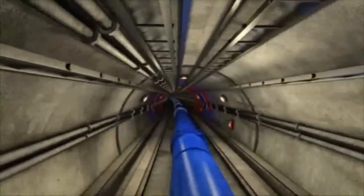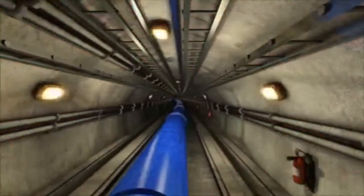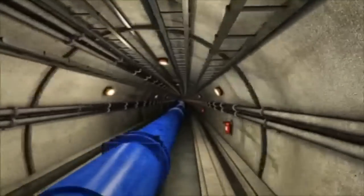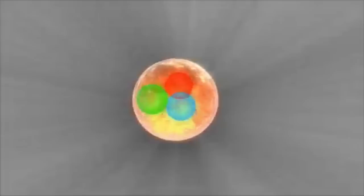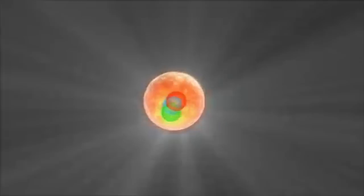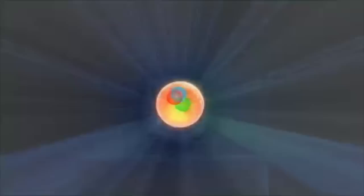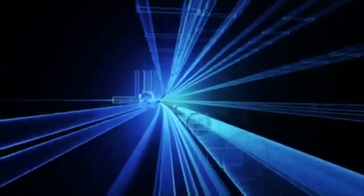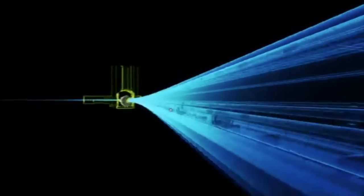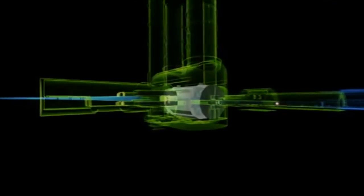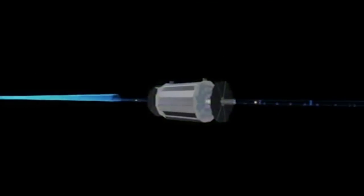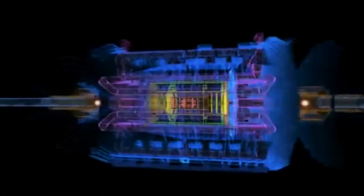Protons travel inside this beam pipe. They are moving extremely fast, basically at the speed of light. This is an artist's representation of a proton containing three quarks, moving towards a head-on collision with another proton. We are obviously in slow motion here. Our proton is approaching the detector, and if everything goes well, it should smash against another proton.